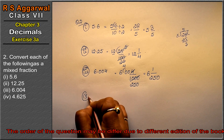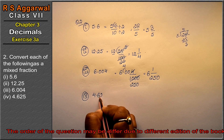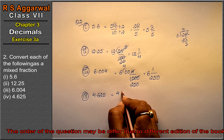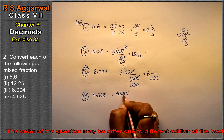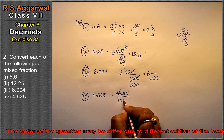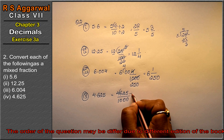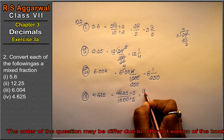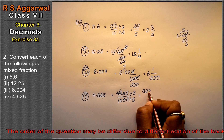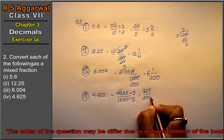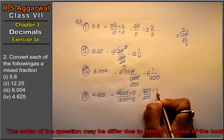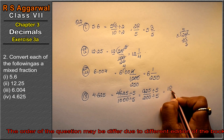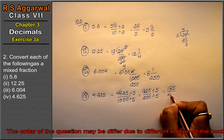Fifth part is 4.625. The point is after 3 digits, so we write it as 4625 over 1000. Divide both numbers by 5: 4625 divided by 5 is 925, and 1000 divided by 5 is 200. Divide by 5 again: 925 divided by 5 is 185, and 200 divided by 5 is 40.